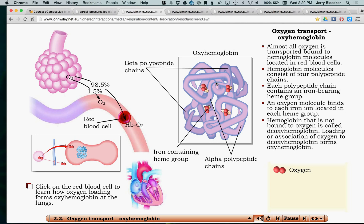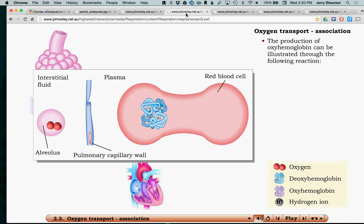So we call that structure when oxygen and hemoglobin come together we call it oxyhemoglobin. Okay now let's just skip ahead here.